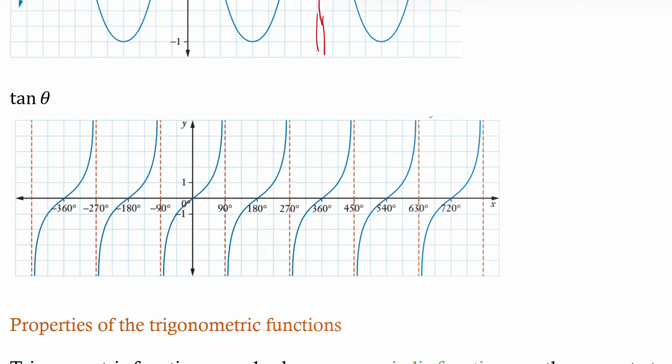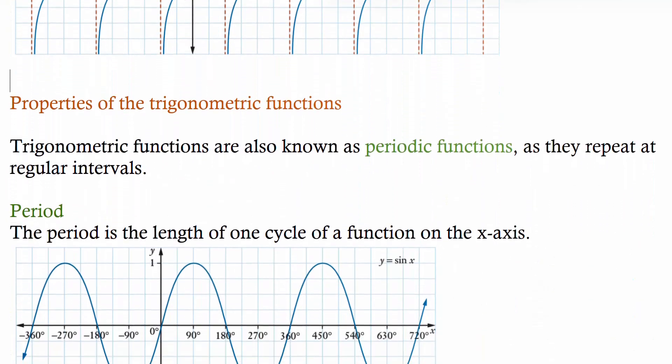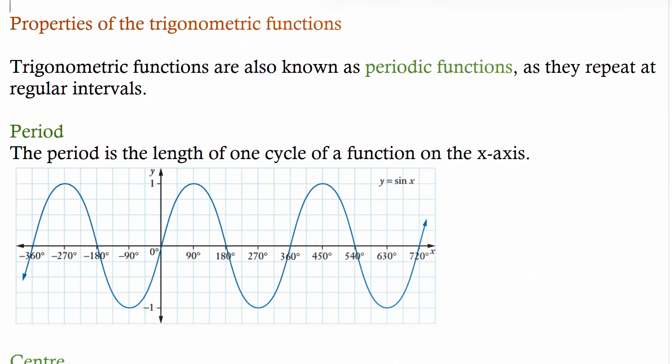Tan is a little bit different to the other two. Trigonometric functions are known as periodic functions because they repeat themselves at a set interval. For the basic ones it's 360 degrees. The period is the length of one cycle of a function.